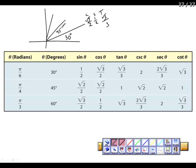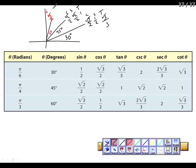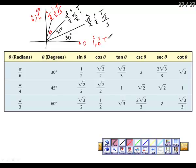For 45 degrees, cosine and sine are both √2/2, and tangent is 1. For 60 degrees, cosine is √3/2, sine is 1/2, and tangent is √3. At 90 degrees, cosine is 0, sine is 1, and tangent is undefined. At 0 degrees, cosine is 1, sine is 0, and tangent is 0.